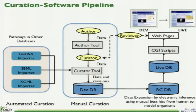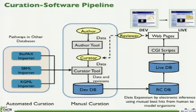Every quarter we take a slice of that data, and it flows into the release candidate database where we add additional external annotations, do software checks, and expand the data to project human pathways into model organisms. That data gets funneled to a live database through scripts that populate web pages. We have a development website where the reviewer can view the information, feed it back to the curator, and when everything's ready for release, we flip a switch and the data moves onto the live Reactome website.